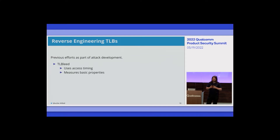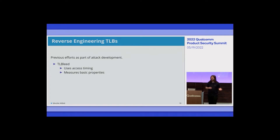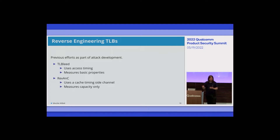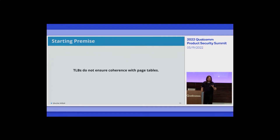Up to this point, all reverse engineering has been done as part of attack projects. TLBleed did some basic reverse engineering of Intel TLBs using access timing — just timing memory accesses to distinguish TLB hits from misses. The RevAnc project used a timing side channel on last-level caches to measure page table walks, but they could only measure the capacity of the TLB.